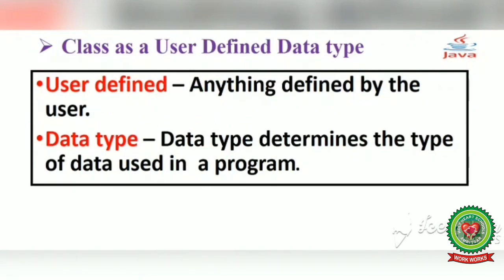We have already discussed what is a class. A class is a collection of objects of the same kind having similar features. User defined means anything that is defined by the user. The user is a person who is working on the computer — the person who is creating programs, whether complex or simple. That person is called a user.